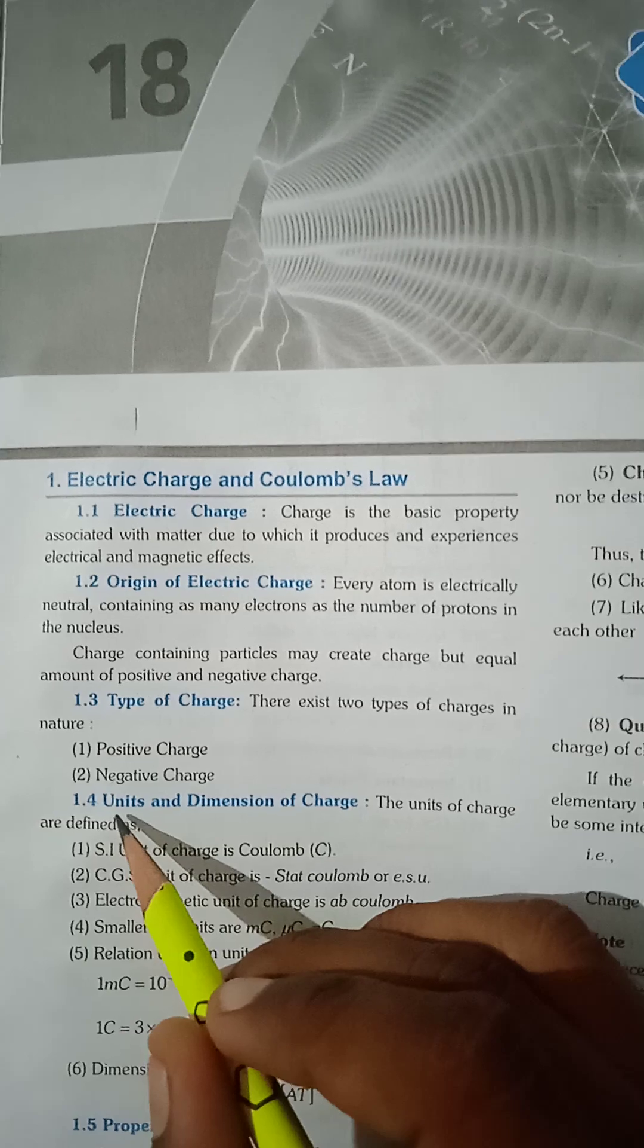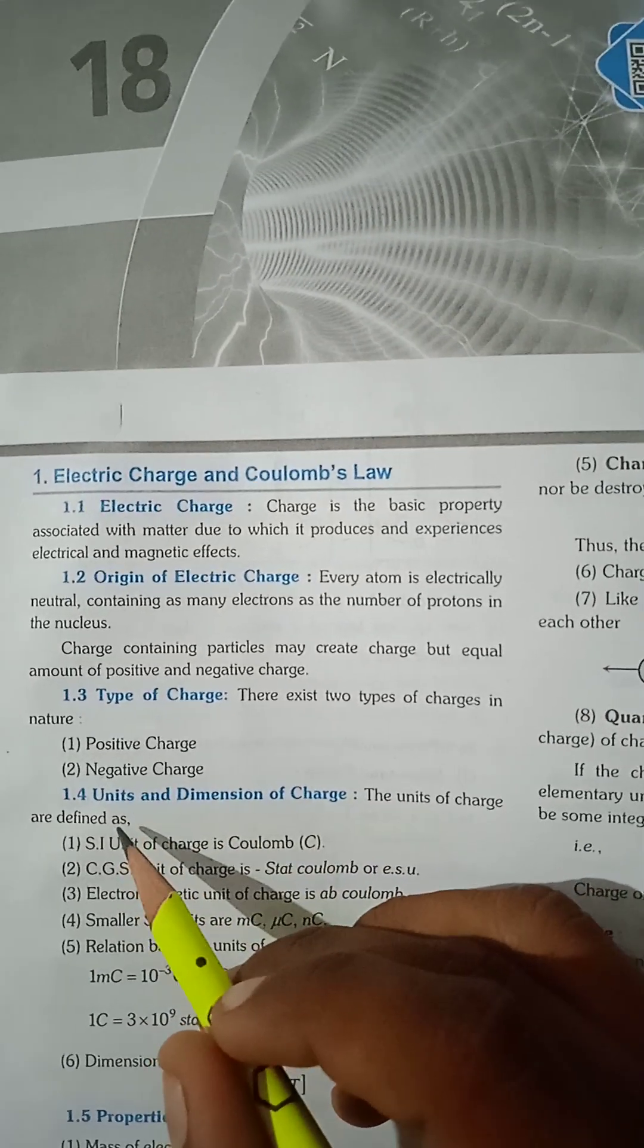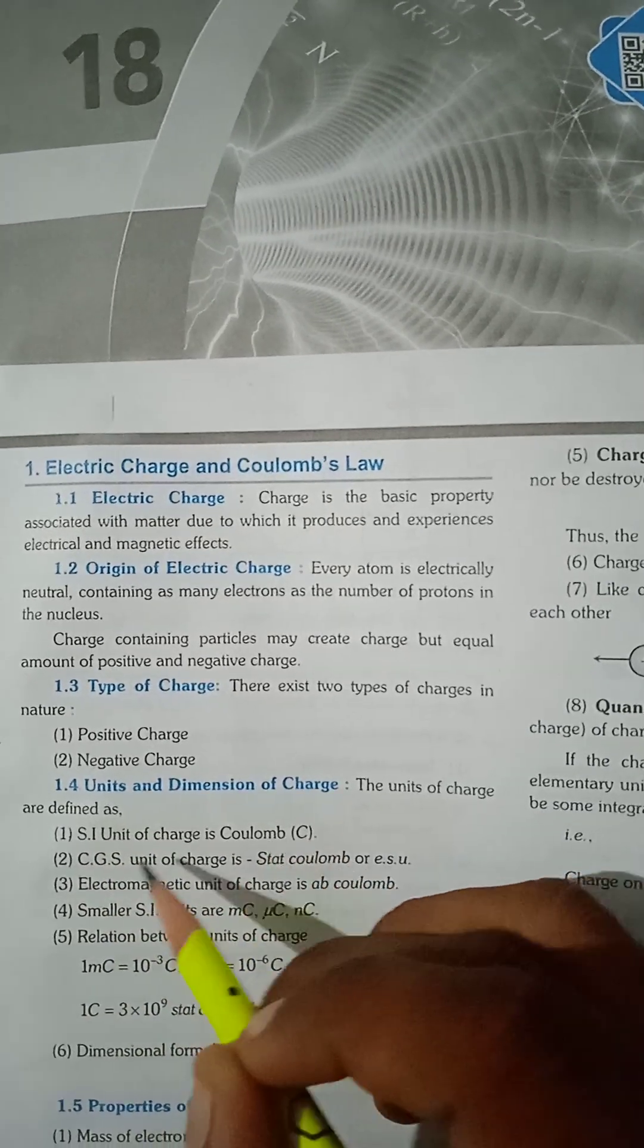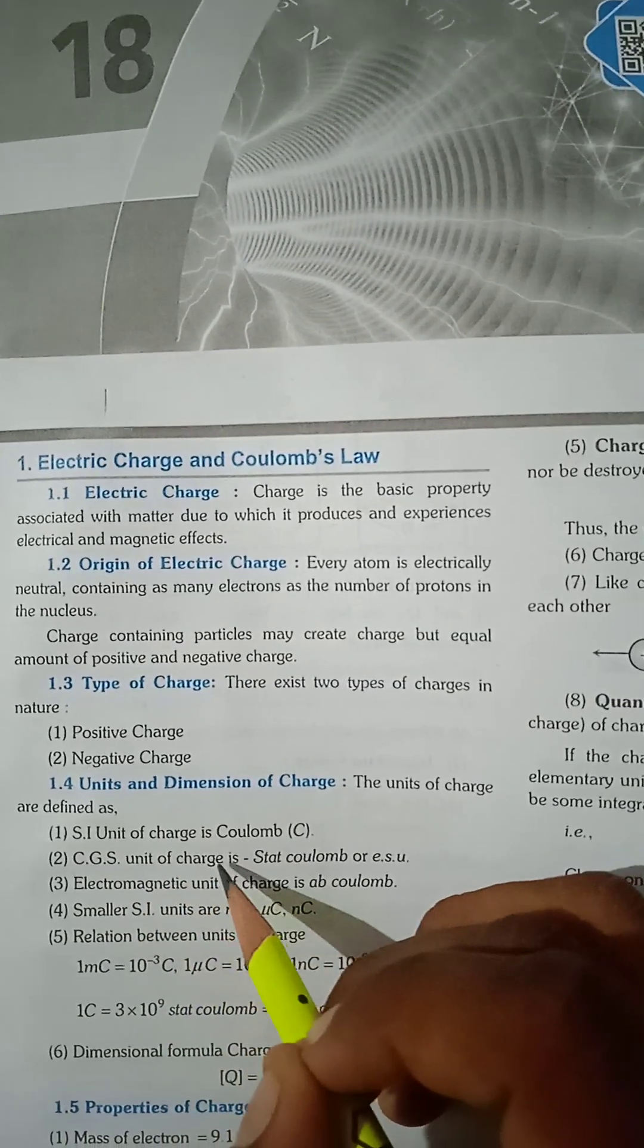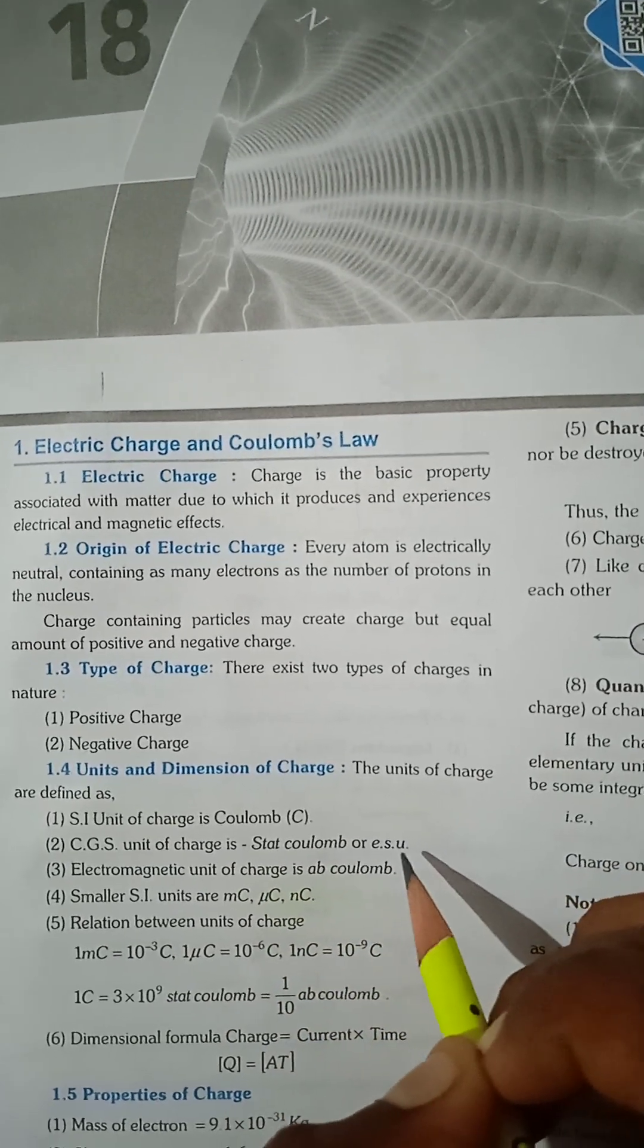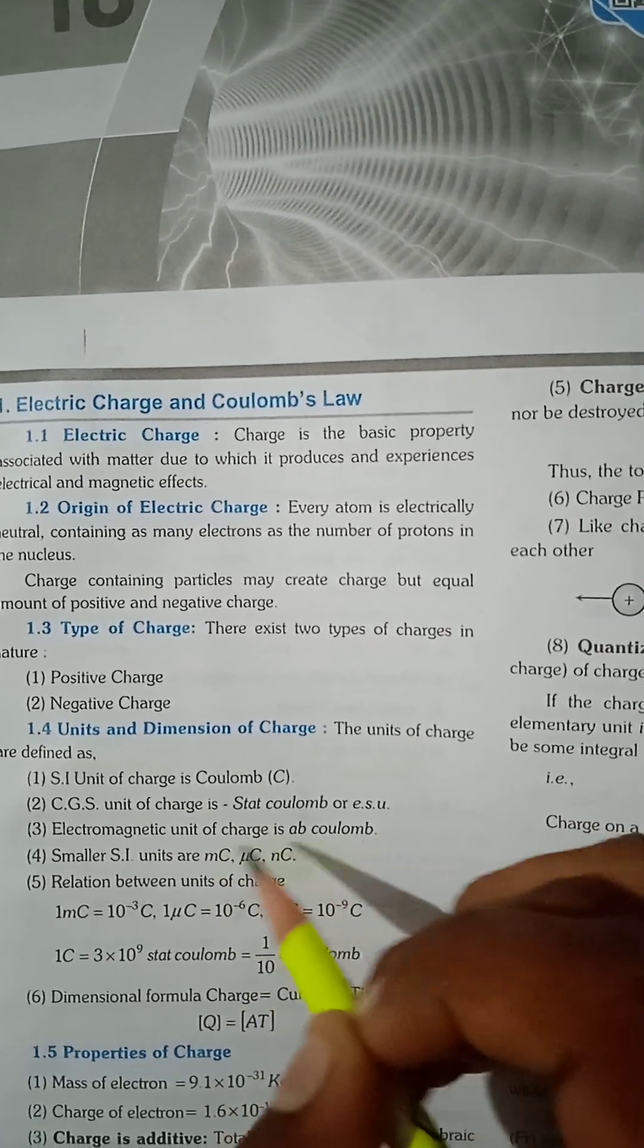Unit and Dimension of Charge: The units of charge are defined as: SI unit of charge is Coulomb, CGS unit of charge is Stat Coulomb or ESU, Electromagnetic unit of charge is AB Coulomb.